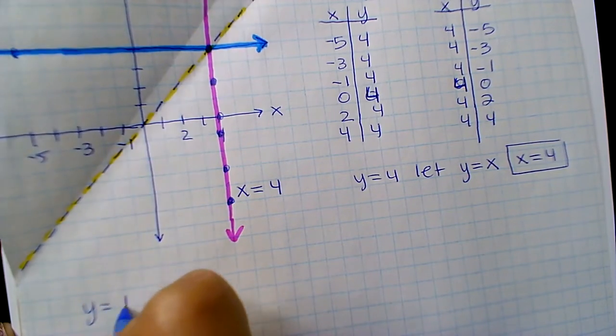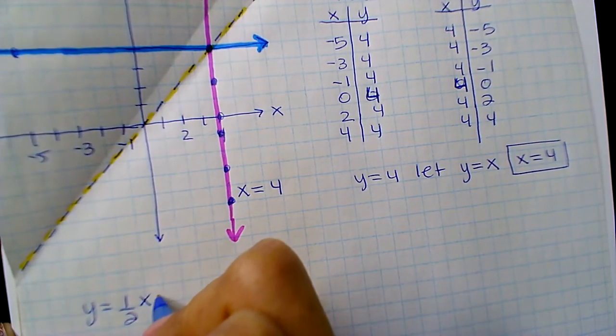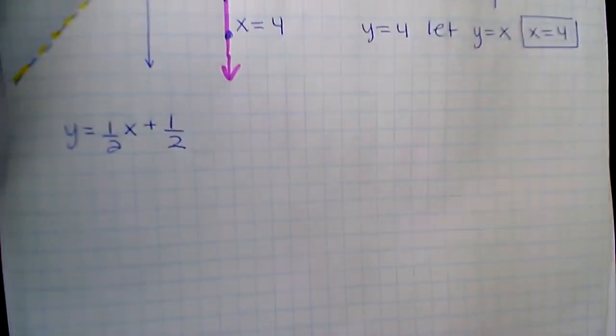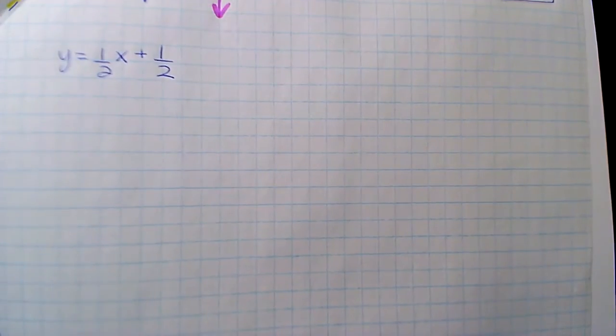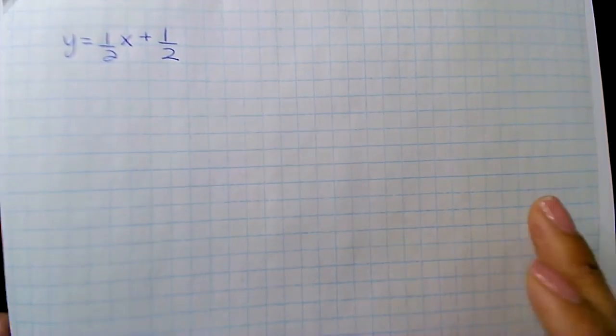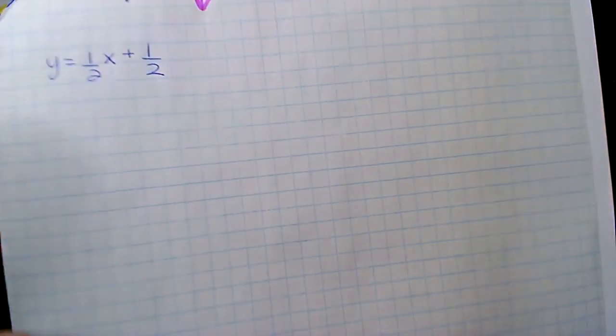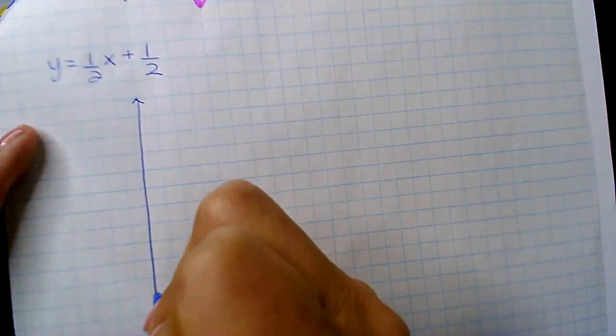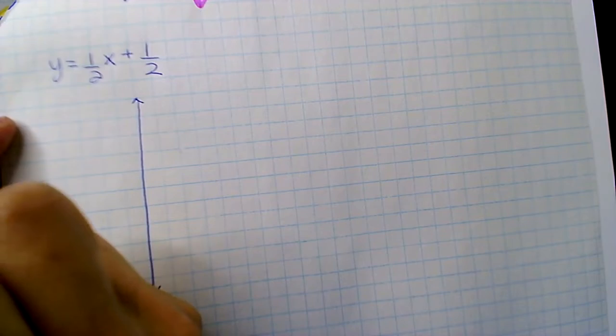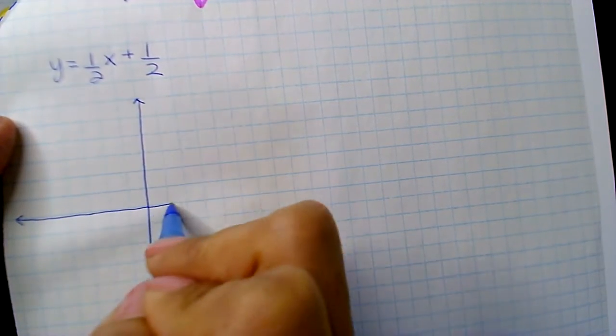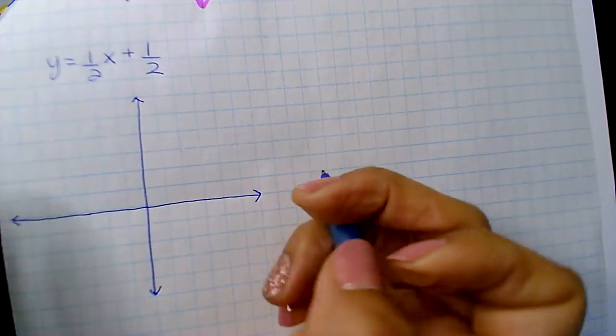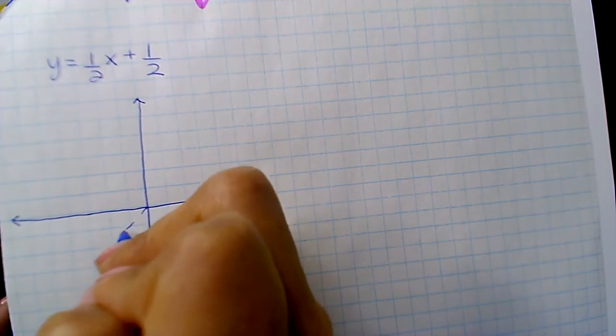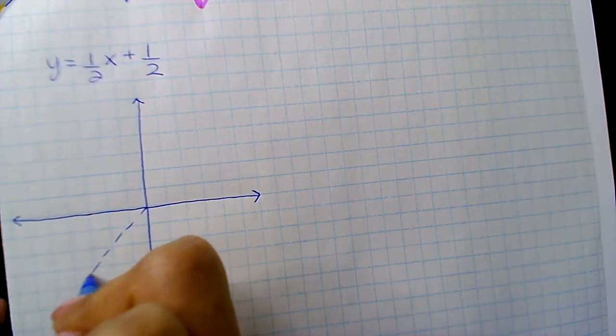All right. Take. All right. So this is your line. So graph it, table it, and then do it algebraically. And just take your time. No rush. And if you want to put the inverse, you can.